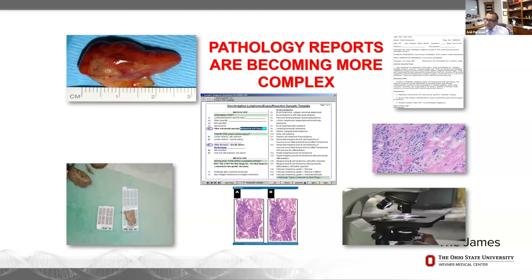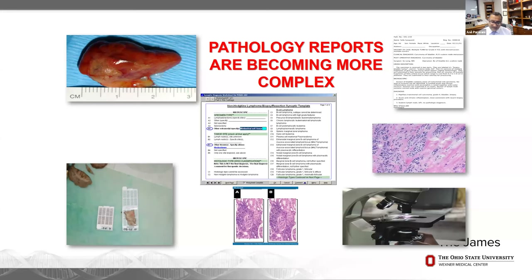Back when I was a resident or a fellow, you looked at an H&E slide and maybe ordered a few immunostains. We didn't have this complexity of information. It's really driven by precision medicine — giving the right diagnosis to the right patient for the right treatment. As pathologists, we can do this testing in our department or outsource it to Foundation Medicine, or we can take ownership and incorporate this information into our reports.